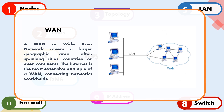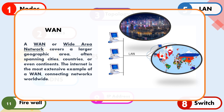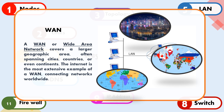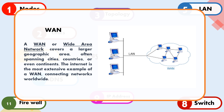A WAN, or wide area network, covers a larger geographic area, often spanning cities, countries, or even continents. The internet is the most extensive example of a WAN, connecting networks worldwide.